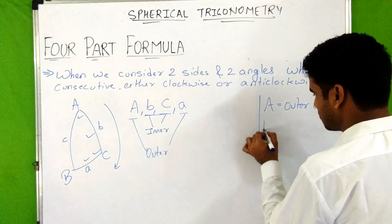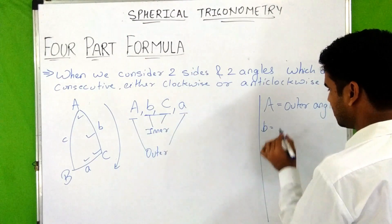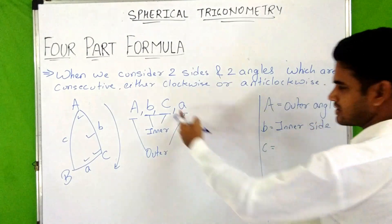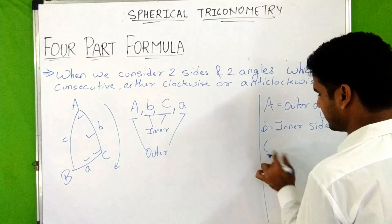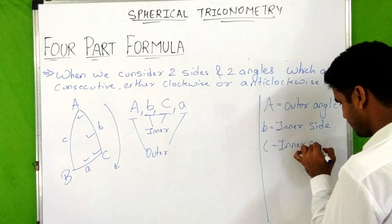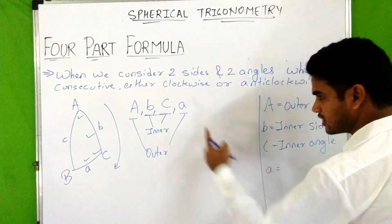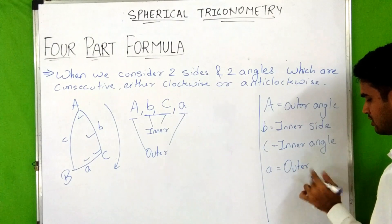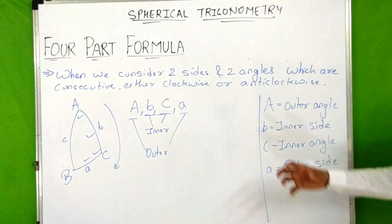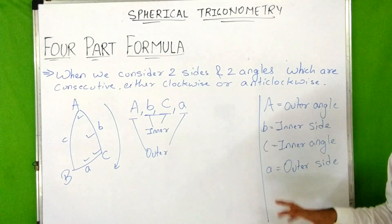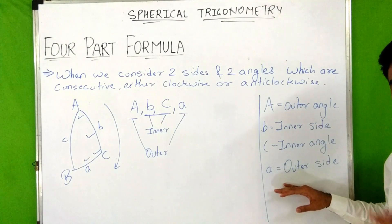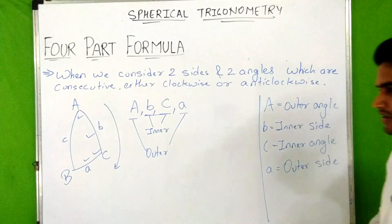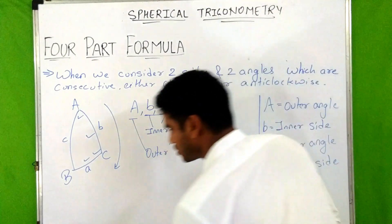Small b is a side and it is an inner part, so it is written as inner side. Capital C is also an angle and it is an inner part, so it is written as inner angle. Small a is a side and it is the last part, so it is written as outer side. So the first and last parts are outer parts, and the two parts between them are inner parts.